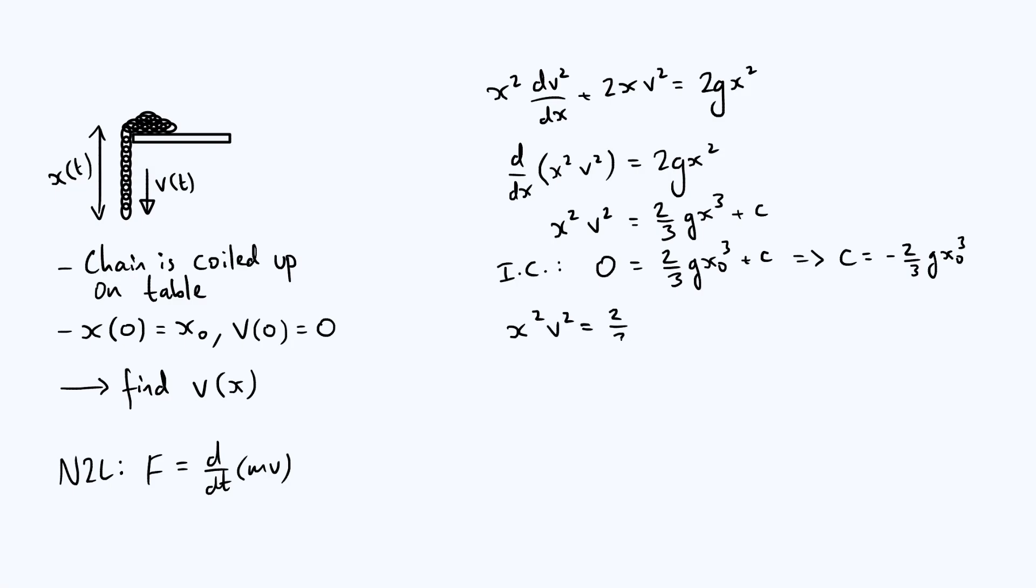So we can substitute that c back into our solution and do a bit of factorizing. So x²v² is—you can pull out a ⅔g—and then you get x³ minus x₀³. And then you can divide by x² and just take the square root of everything, and you're going to end up with v is—put the square root on at the end—it's going to be √(2g(x³ - x₀³)/(3x²)). We do of course want the positive square root just on physical grounds, because you can see that the chain is always going to be moving downwards because it's being pulled by gravity.